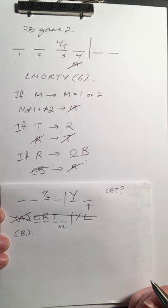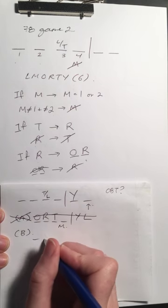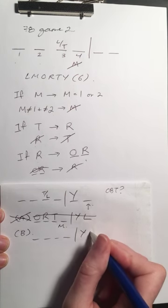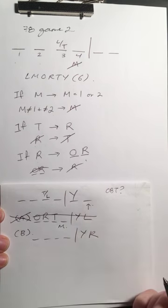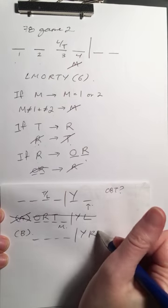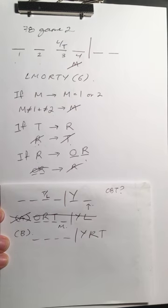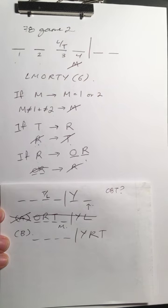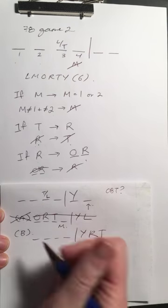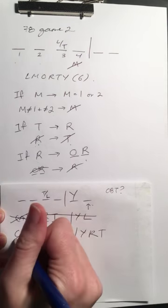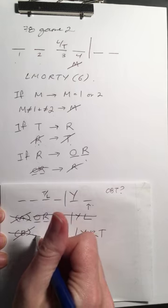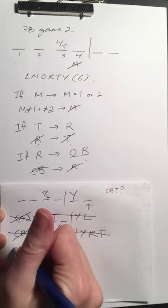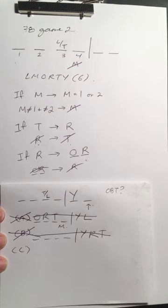Answer choice B: R is not assigned to the project. Y is out and R is out. If R is out, T is also out. Now we have three players out, leaving only three players to fill four spots — we can't complete our solution. So B doesn't work either.